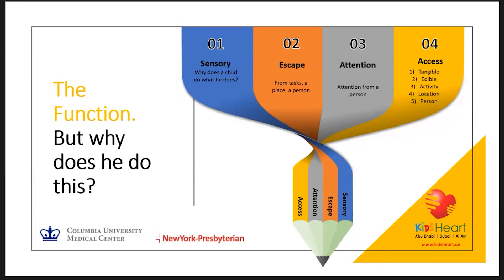Access is the fourth function — when you want something. The proper way to get access is to walk toward it and get it yourself, or ask for it — verbally, by text, by signing, or by showing a picture of what you want. So in ABA, anything any living organism does has a function.